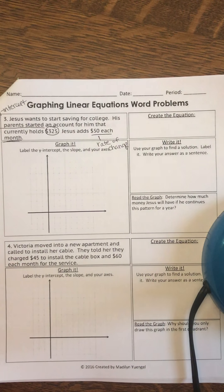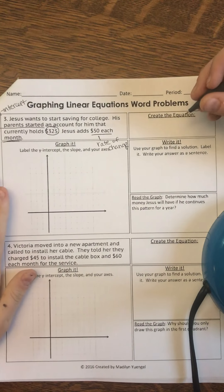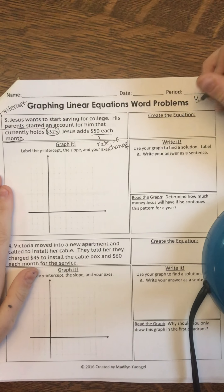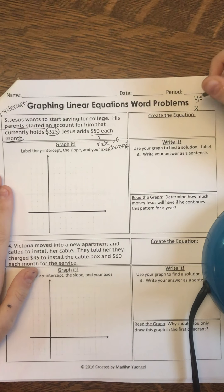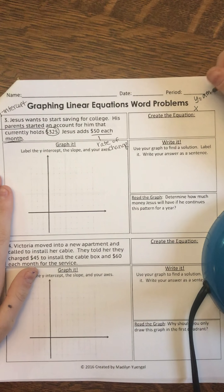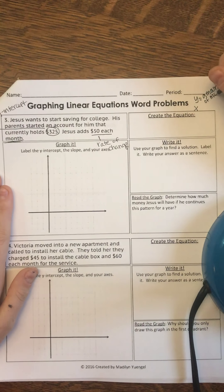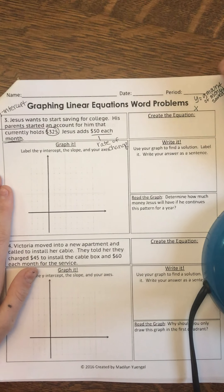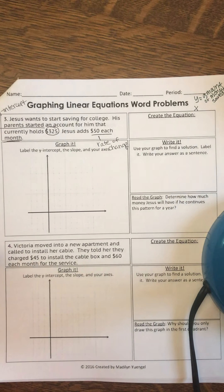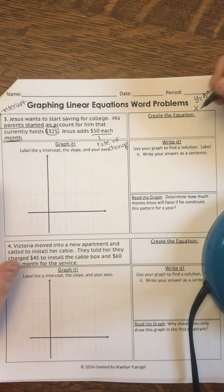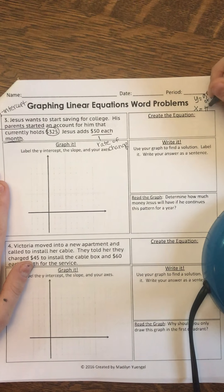So first things first, I need to create my equation. I'm going to label my variables, Y and X. Y stands for amount of money saved. Because this is the total amount he's saving, depending on the month, how much money is in his bank account is Y. X is the number of months.